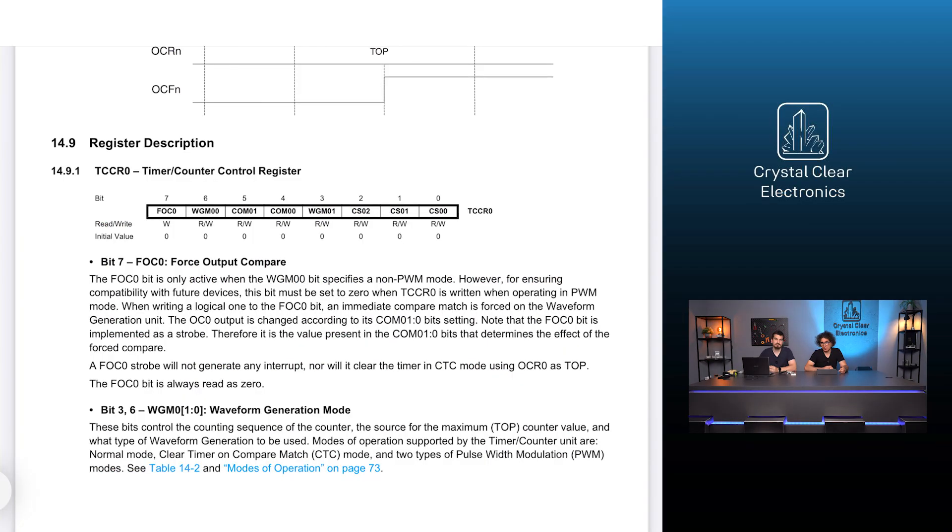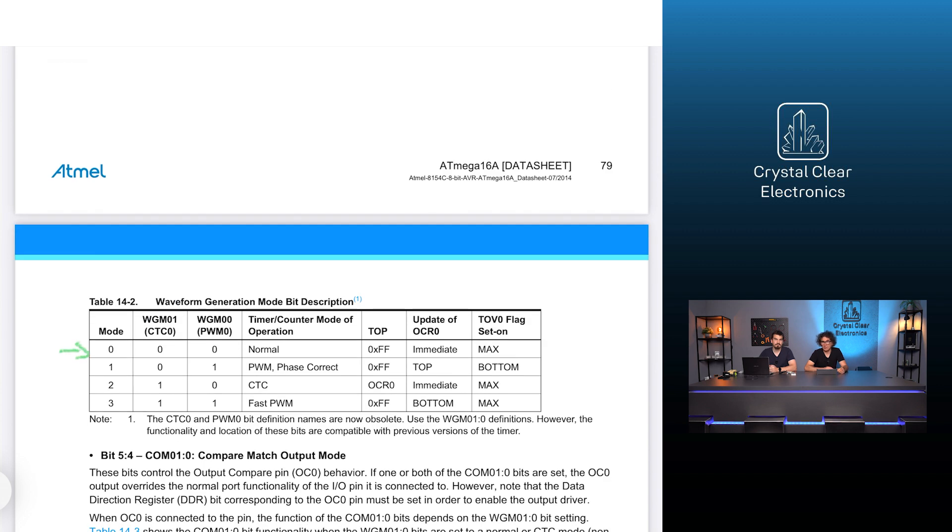Let's take a look at the configuration options of the timer peripherals. One of the two most important configuration options defines the mode of operation of the counter. In normal mode, the counter starts from zero and the counter value is increased by one until it reaches the maximum value — 255 for an 8-bit counter, 65,535 for a 16-bit counter. Then the counter overflows and continues counting from zero. This overflow event is indicated by the TOV bit, which stands for timer overflow. We can select this mode by setting the WGM1 and WGM0 bits of the TCCR register to zero, as seen in table 14.2 of the datasheet.